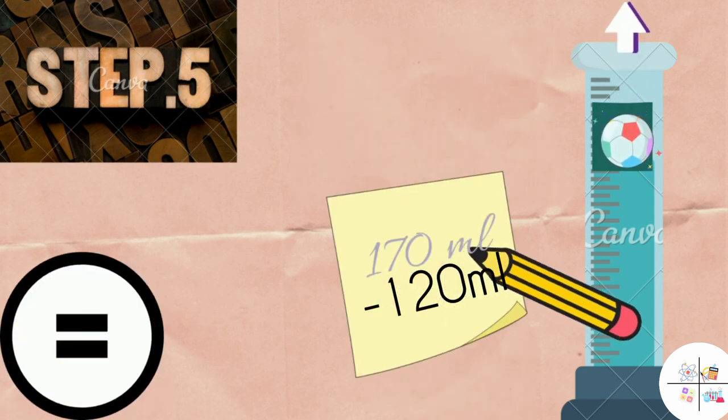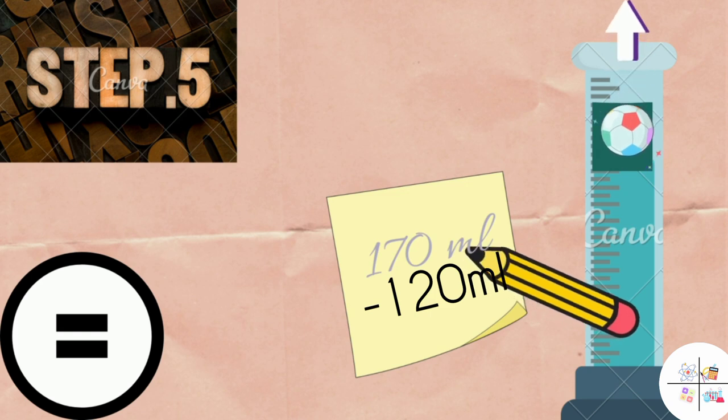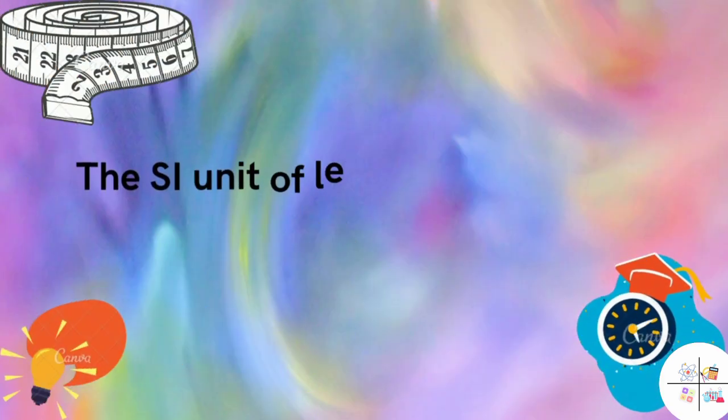Step five: the increase in the volume is equal to the volume of the object. 170 ml minus 120 ml. The SI unit of length is meters.